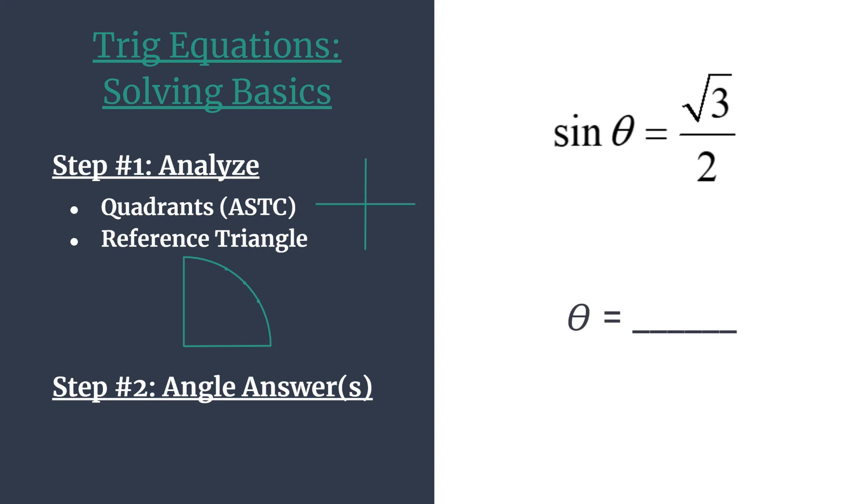And here's that equation again, sine theta equals positive root 3 over 2. And again, our overall thought needs to be for which angles is the sine equal to the ratio positive root 3 over 2.